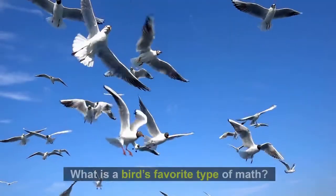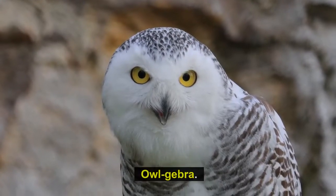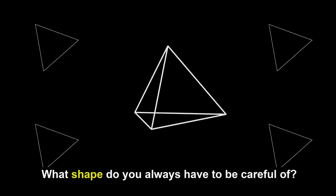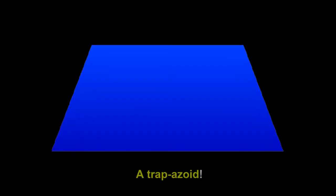What is a bird's favorite type of map? Algebra. What shape do you always have to be careful of? A trapezoid.